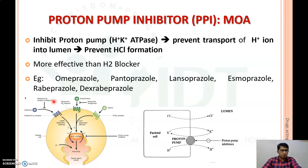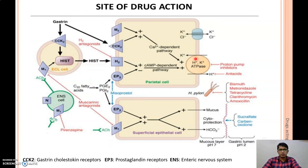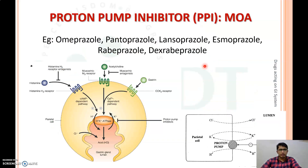Whenever different mediators like histamine or acetylcholine activate the calcium-dependent pathway, it activates the H+/K+ ATPase or proton pump to transport H+ into the gastric lumen, where it combines with chloride to form HCl. PPIs act on the H+/K+ ATPase pump, preventing transport of H+ into the lumen, thereby preventing combination of H+ with Cl− to form HCl. That is the mechanism of action of PPIs like omeprazole, pantoprazole, lansoprazole, esomeprazole, rabeprazole and dexrabeprazole.